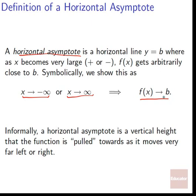Informally, we can think of a horizontal asymptote as a vertical height that the function is pulled towards as it moves very far left or right. Over the long term, it will start off somewhere else, but it gets pulled in the long term to a certain height, getting really, really close to this horizontal asymptote.